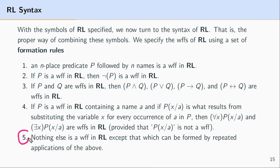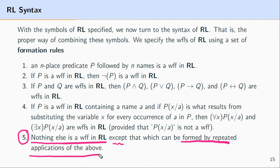The fifth rule states that nothing else is a well-formed formula in the language of predicate logic except those formulas that can be formed by repeated applications of the above rules. In other words, the only things that are well-formed formulas in this language are formulas that can be formed using these four rules.